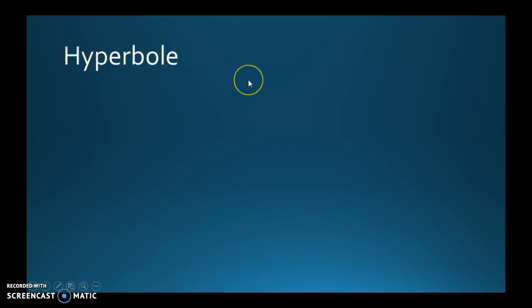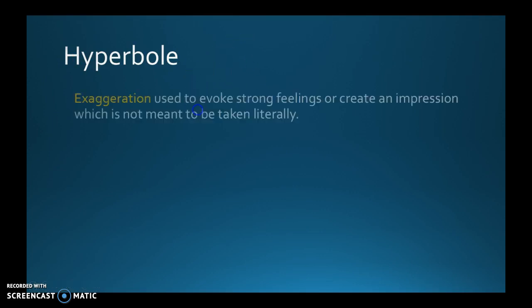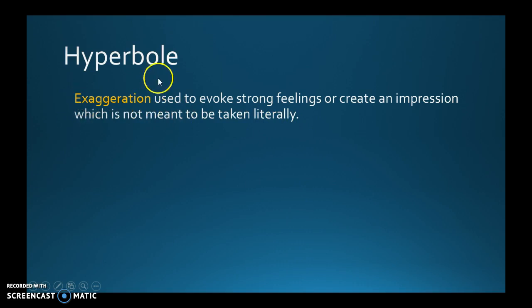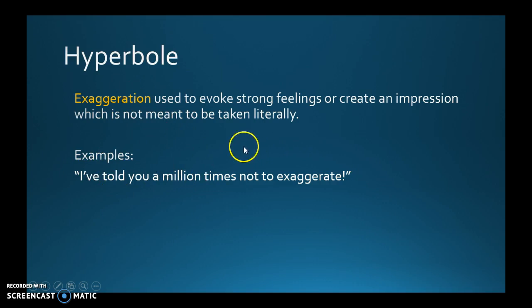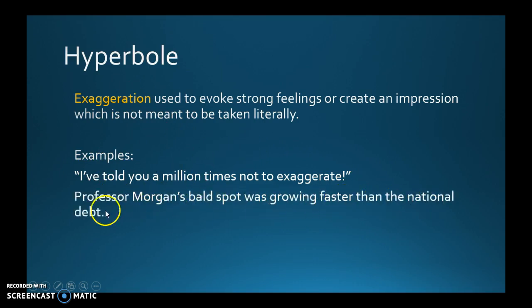Now let's look at hyperbole. You might want to pronounce it 'hyperbole', but it's actually pronounced hyperbole. It's basically exaggeration — the big fancy word for exaggeration. It's when you use exaggeration to evoke strong feelings or create an impression which is not to be taken literally. People use hyperbole all the time to get their point across. For example: 'I've told you a million times not to exaggerate.' A million? That's an exaggeration — that's hyperbole. Another example: 'Professor Morgan's bald spot was growing faster than the national debt.' Is it really growing that fast? The point is it's not to be taken literally; it's just an exaggeration to prove a point. That's called hyperbole.